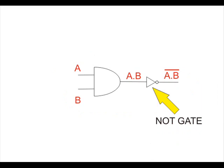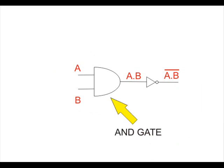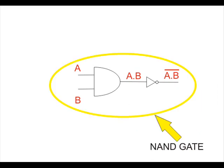A NOT gate followed by an AND gate makes a NAND gate. The basic logical construction of the NAND gate is shown here in this figure.